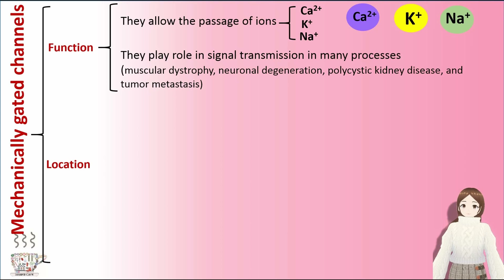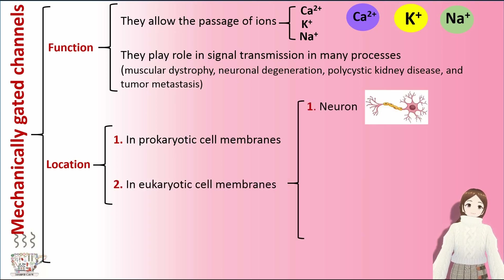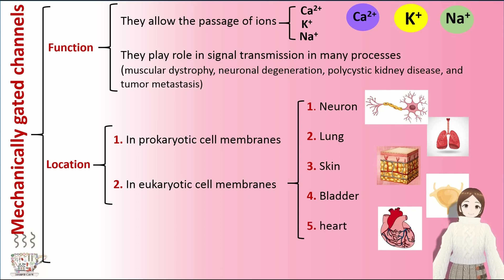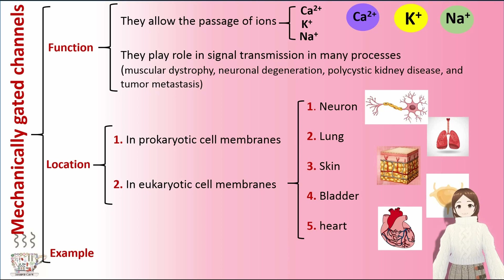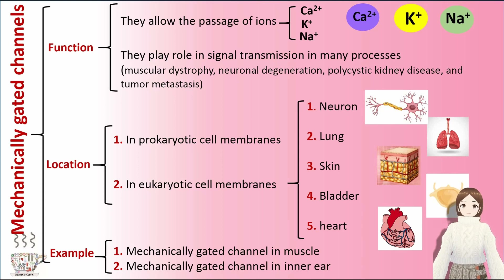Mechanically gated channels are found in eukaryotic cell membranes like neuron, lung, skin, bladder, and heart. Two examples of these channels are mechanically gated channel in muscle and mechanically gated channel in the inner ear.